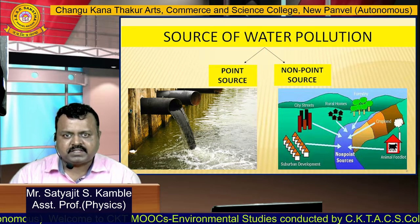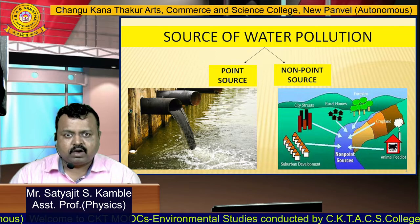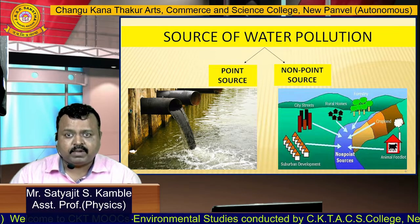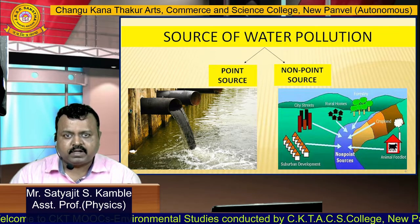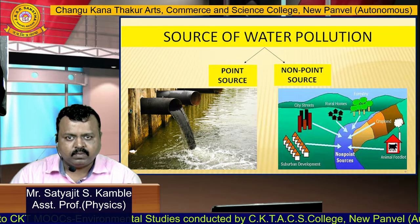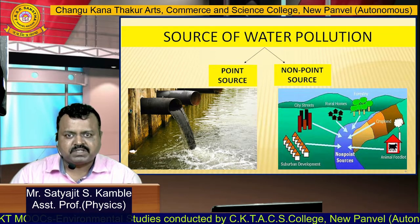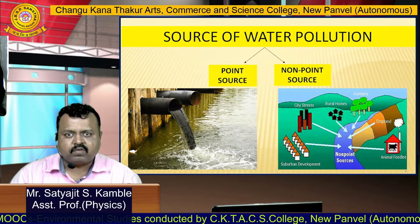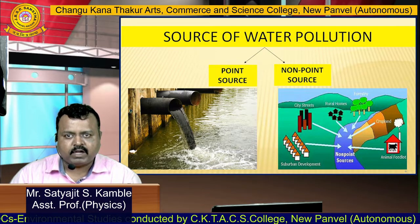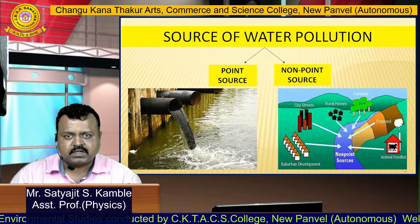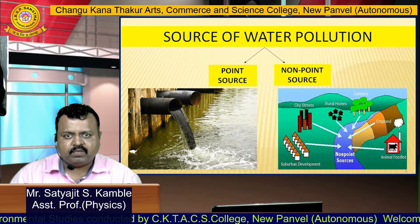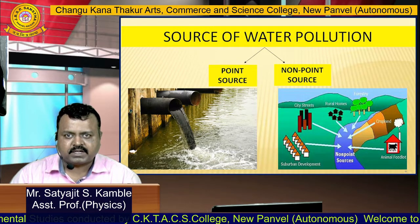For example, here in this diagram, water is becoming polluted because of effluent from homes, from cities, from suburban development projects, animal feedlots, etc.